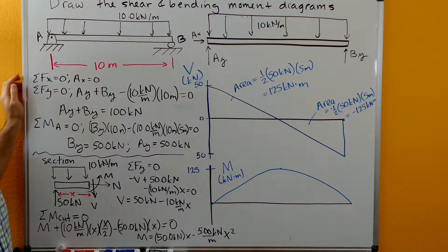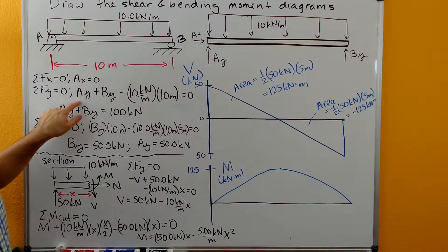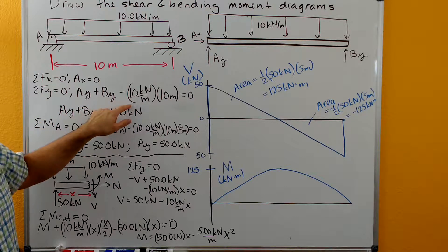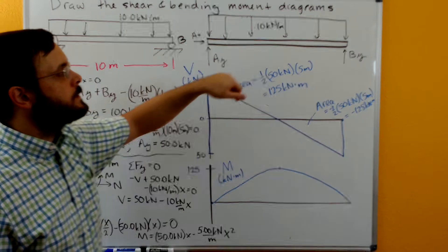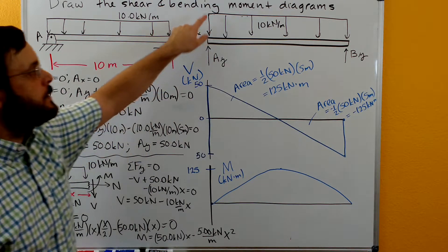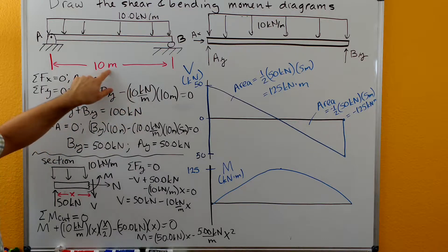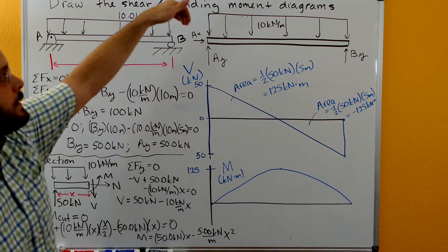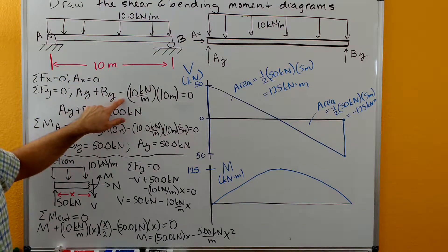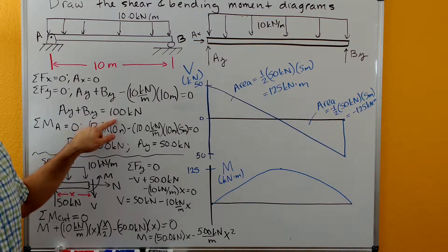Solving for these reactions: sum of forces in X equals zero gives us AX is zero. Sum of forces in Y equals zero gives us AY plus BY minus the force from the distributed load. This is a rectangular shape, so the force from the distributed load is the area of the rectangle — 10 kN per meter times 10 meters, base times height, acting down. So we get AY plus BY equals 100 kN.